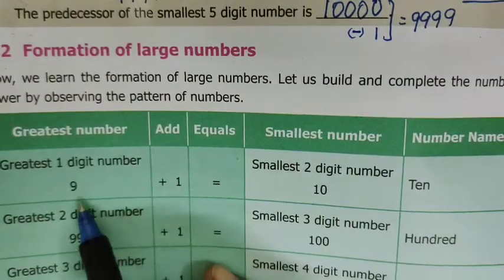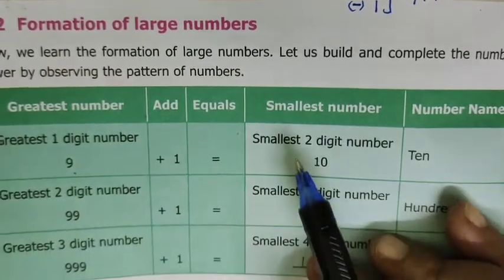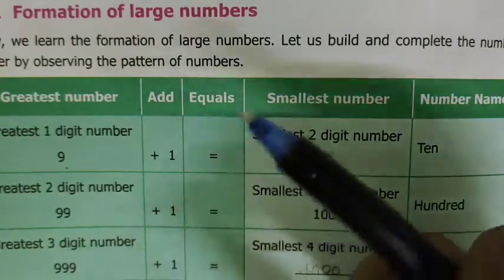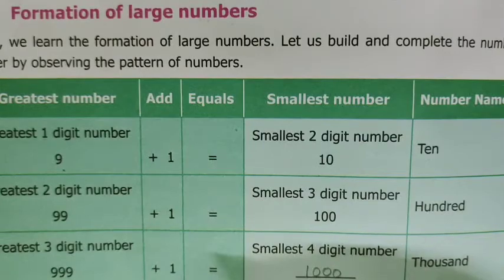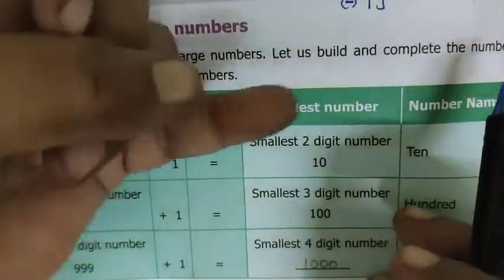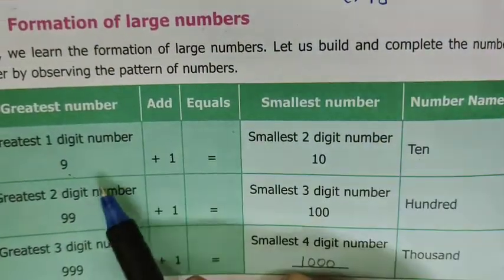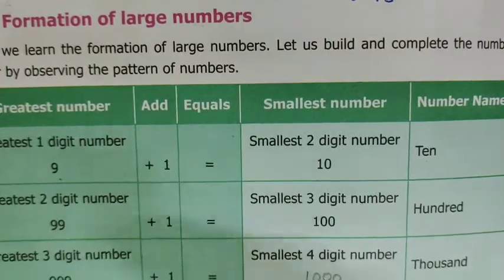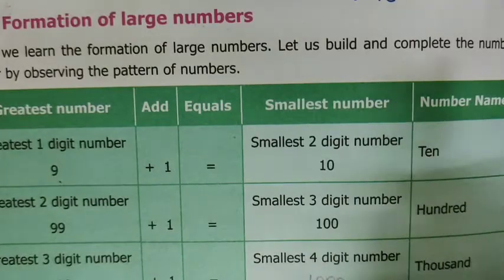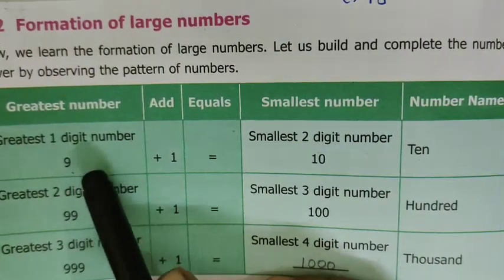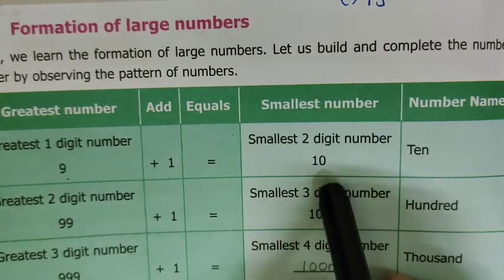The greatest 1-digit number is 9. The greatest 2-digit number is 99. Adding 1 to 9 gives 10 — that is a 2-digit number. So the greatest 1-digit number is 9, greatest 2-digit is 99, greatest 3-digit is 999. The smallest number of the next group starts with 1 followed by zeros.